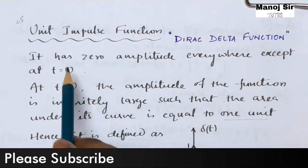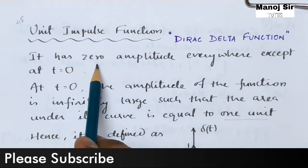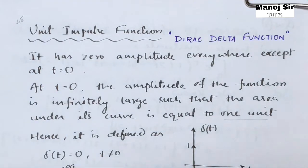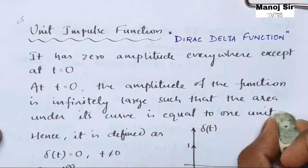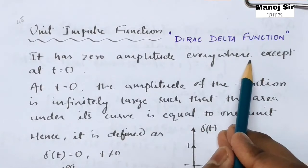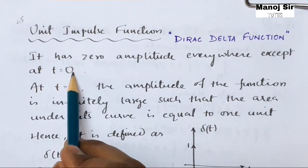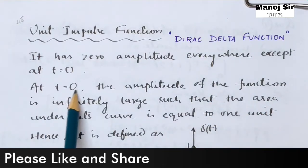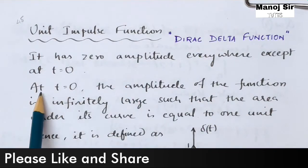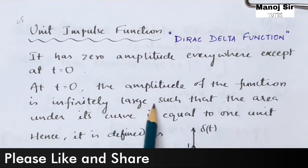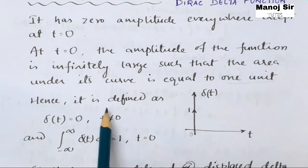The unit impulse function has zero amplitude everywhere except at t equal to zero. The amplitude of the unit impulse function is always zero except at t equal to zero. At t equal to zero, the amplitude of the function is infinitely large, such that the area under its curve is equal to one unit.